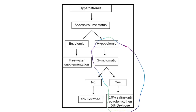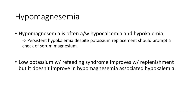Hypernatremia requires assessing volume status and providing appropriate fluid. In euvolemic or asymptomatic cases, we provide free water supplementation. But in cases of symptomatic hypovolemia, we need to give 0.9% normal saline until euvolemic, followed by free water with 5% dextrose.